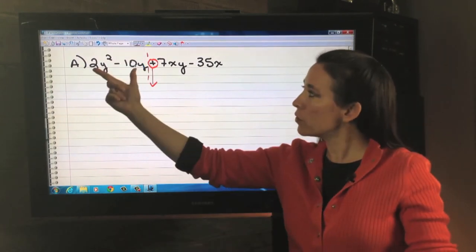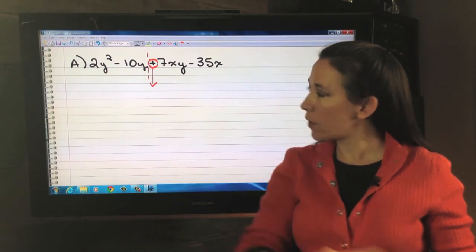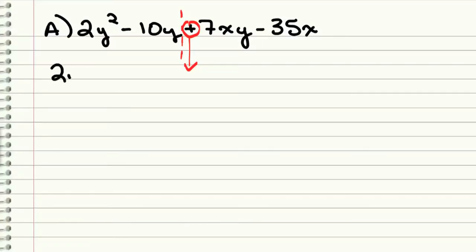So on the first two, we have a GCF of a 2y, leaving us with a y - 5. On the second two, we're going to take out a positive GCF, since our front runner was a plus, a positive. And the second two have a 7 and an x in common, leaving us with a y - 5.